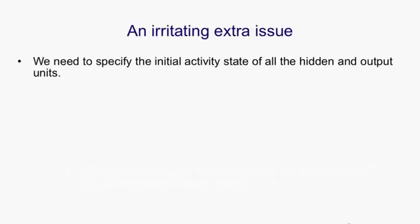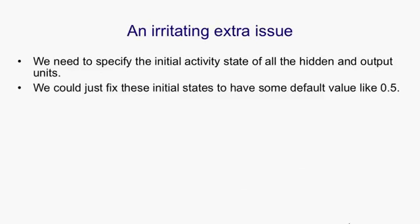There's an irritating extra issue. If we don't specify the initial state of all the units, for example, if some of them are hidden or output units, then we have to start them off in some particular state. We could just fix those initial states to have some default value like 0.5, but that might make the system work not quite as well as it would otherwise work if it had some more sensible initial value.